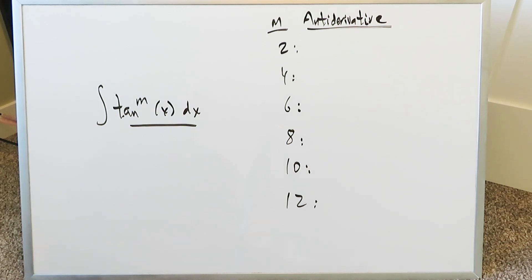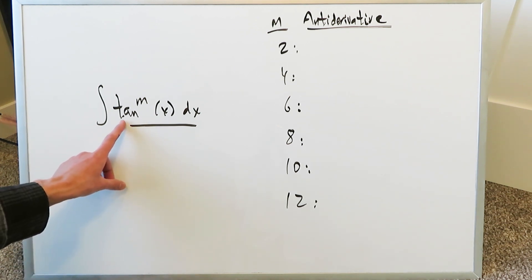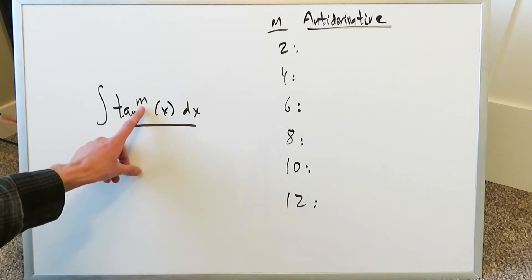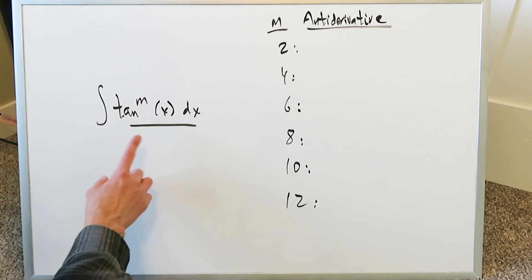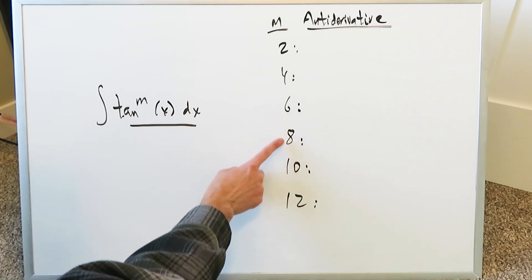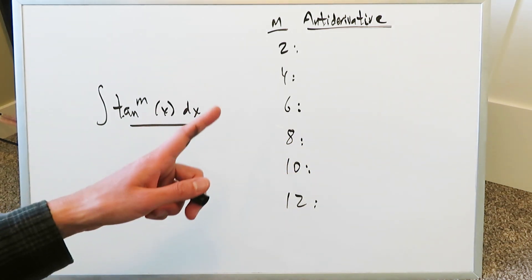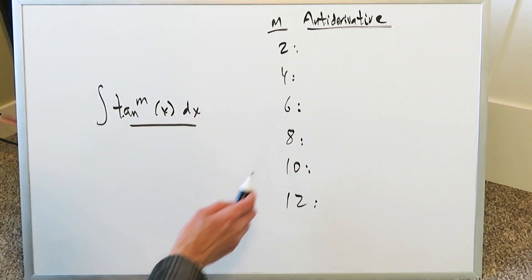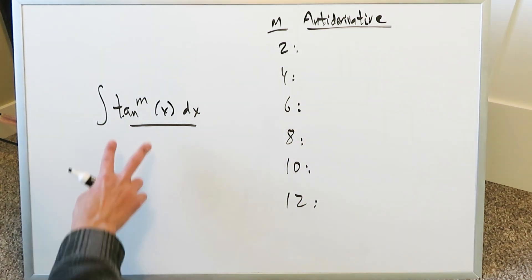Good afternoon. I am Mr. Ish. Thank you for joining me for this very interesting video. In this video we're looking at integrals of the form tangent to the power of mx, where m is an even number. The exponents we will evaluate are 2, 4, 6, 8, 10, and 12. We will literally evaluate the 2, 4, and 6, then we will extrapolate these because a very good pattern will develop.